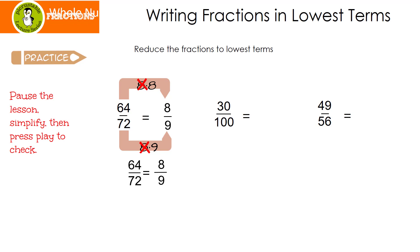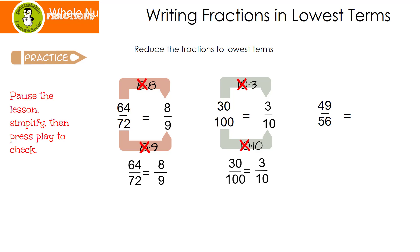Let's look at 30 over 100. For this one, anytime my number ends in a zero, I know that 10 goes into it. 10 times 3 is 30 and 10 times 10 is 100. I'm going to cancel out my common factors and I end up with 3 over 10. 3 over 10 does not have a common factor, so 30 over 100 reduces to 3 over 10.